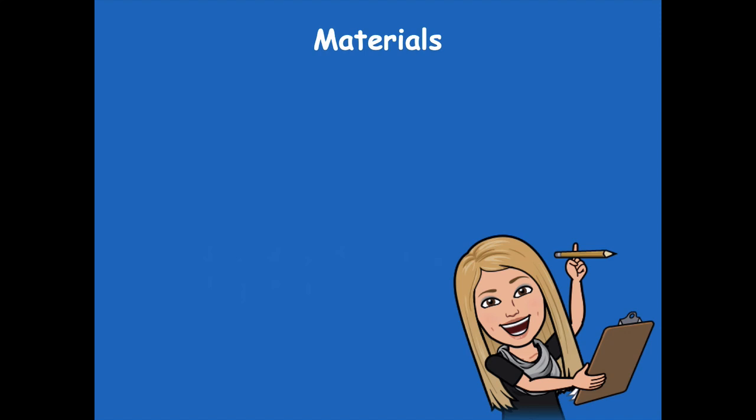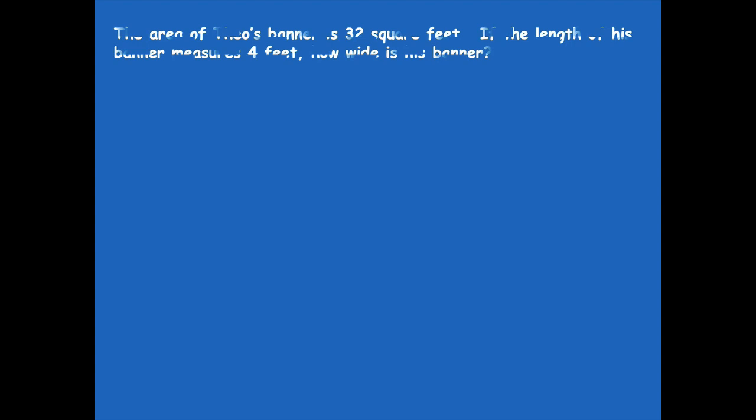The materials that you'll need are a dry erase board. Our first problem is: the area of Theo's banner is 32 square feet. If the length of his banner measures 4 feet, how wide is his banner? So the first thing to consider — is this a one-step problem or a two-step problem? It's a one-step problem.